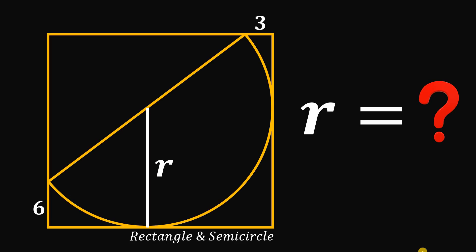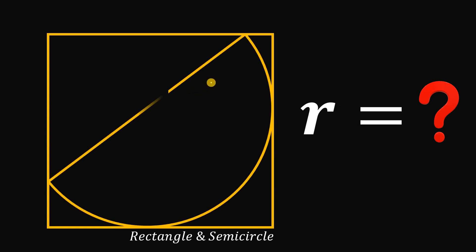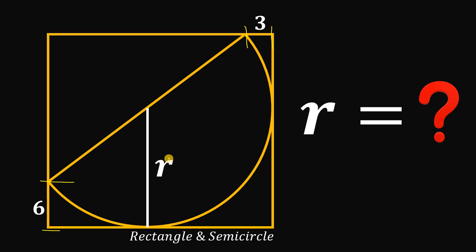Today we will answer a geometry challenge coming from one of our followers. Given this rectangle, let's draw a semicircle inside of it wherein the semicircle is tangent to the side of this rectangle. This segment measures three units and this segment measures six units. Our goal in this question is to find the radius r.